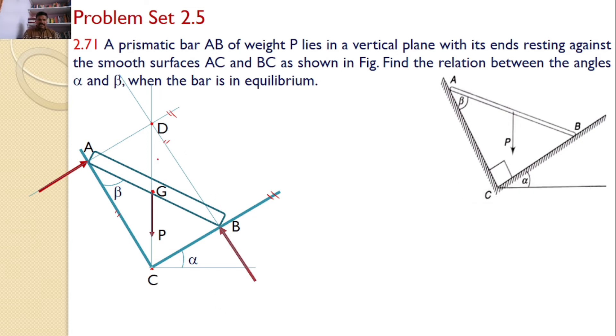Now DC is another diagonal. AB is one diagonal, and DC is another diagonal. Both diagonal lengths must be the same, that means AB must equal DC.